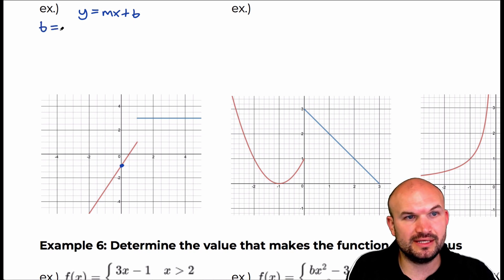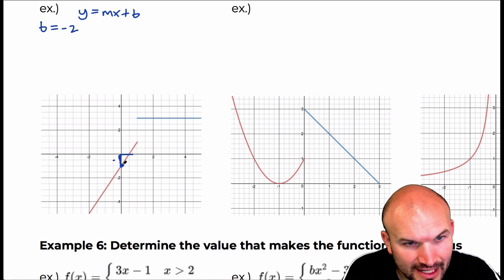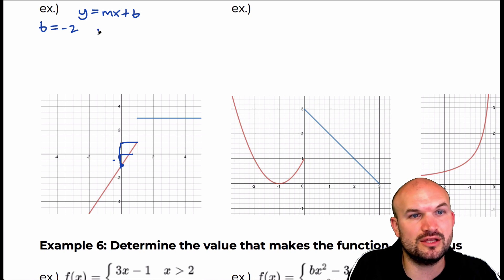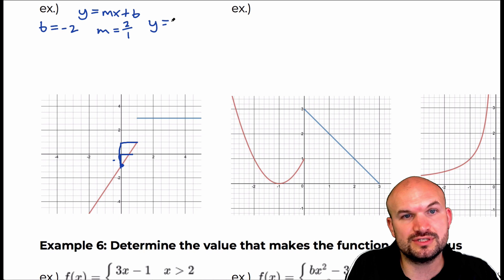So, we say b equals negative two. And then we can see the slope here, kind of using a nice little slope triangle. Say we're going up two over one. I'm sorry, up one, and looks like over one half. So, let's kind of use this in integers. So, let's go up two, and then looks like it's over one. So, my slope is m equals two over one. So, if I was going to write the equation of this, as far as this line, it would be y equals 2x minus two.